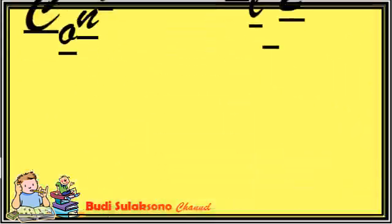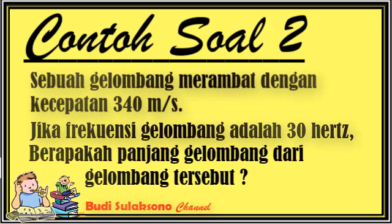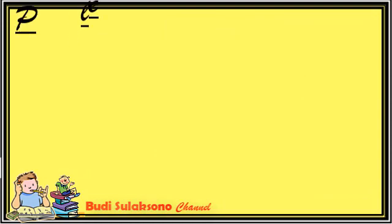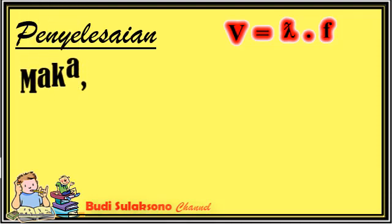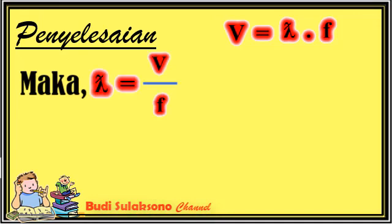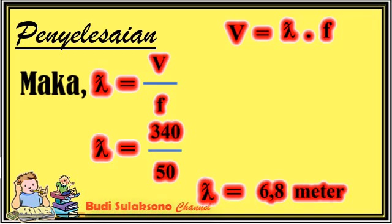Contoh soal dua: Sebuah gelombang merambat dengan kecepatan 340 meter per sekon. Jika frekuensi gelombang adalah 50 Hz, berapakah panjang gelombang dari gelombang tersebut? Penyelesaian: kita menggunakan rumus V = λ × F. Karena soal ini menanyakan panjang gelombang, maka rumusnya berubah menjadi λ = V/F. λ = 340/50, sehingga diperoleh nilai λ atau panjang gelombang = 6,8 meter.